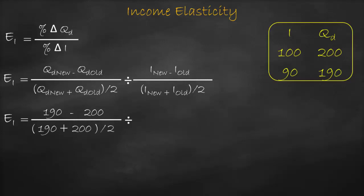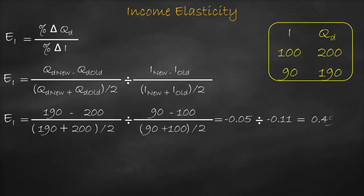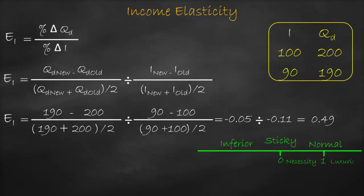Divided by 90 minus 100, divided by (90 plus 100) divided by 2. This gives us negative 0.05 divided by negative 0.11, which gives us 0.49. The benchmark for income elasticity is zero: if zero, it's a sticky good; bigger than zero, normal; lower than zero, inferior. For normal goods, between 0 and 1 is necessity, bigger than 1 is luxurious. Income elasticity equals 0.49 — bigger than 0, so it's a normal good, and since 0.49 is lower than 1, it is a necessity.